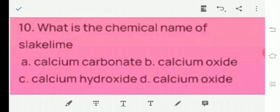Question number 10, what is the chemical name of slake lime? A. Calcium carbonate, B. Calcium oxide, C. Calcium hydroxide, D. Calcium oxide. So the answer is C. Calcium hydroxide.